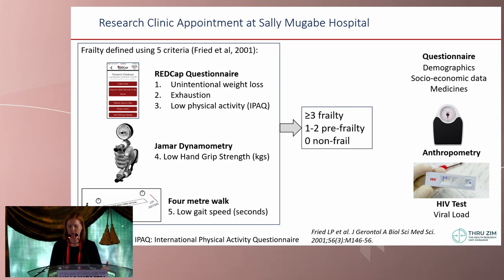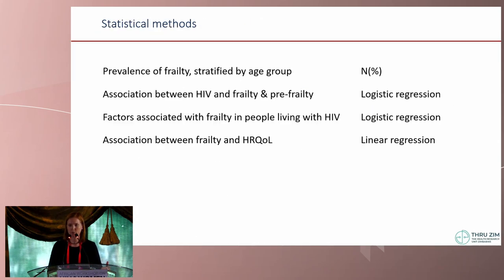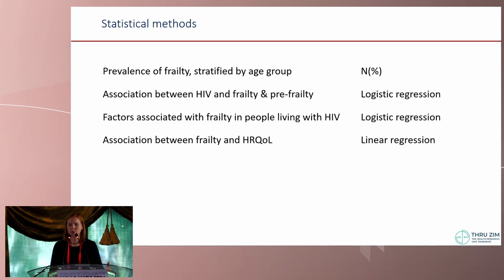In terms of statistical methods: prevalence of frailty was stratified by age group and shown as n and percentages. We used logistic regression to examine the association between HIV and frailty and the factors associated with frailty, and linear regression to examine the association between frailty and quantitative health-related quality of life.